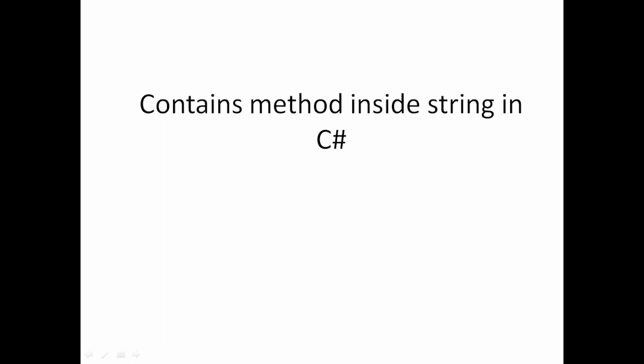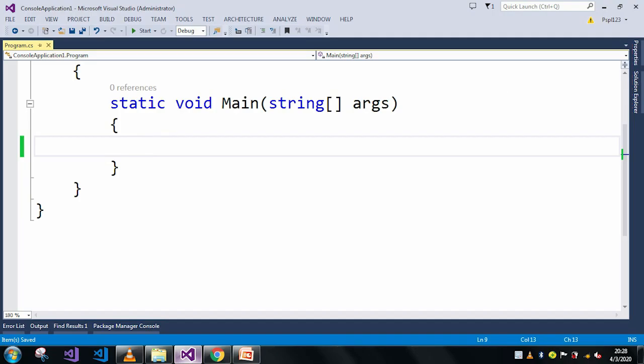In the case of the contains method, we will pass a string as a parameter — it can be any type of string. That string will be checked in the main string to see whether that particular string is present in the main string or not. Let me quickly move to Visual Studio to give an example.